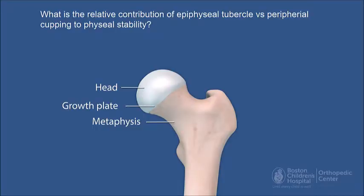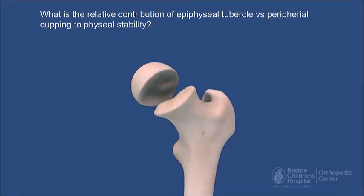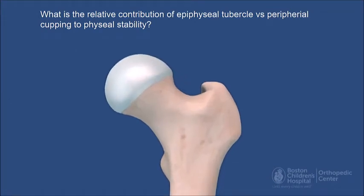This is just an animation. There is a structure to the physis. There's an epiphyseal tubercle located in the posterior superior part of the hip — it's very consistently seen, and it actually stabilizes the physis in the early part of growth. In addition, epiphyseal extension or physis cupping occurs later on in growth, and that may confer additional stability to the physis.